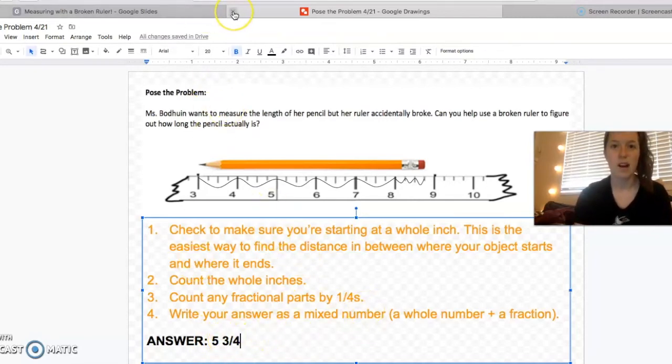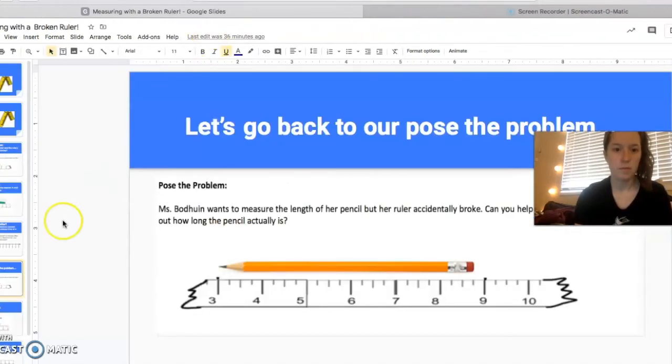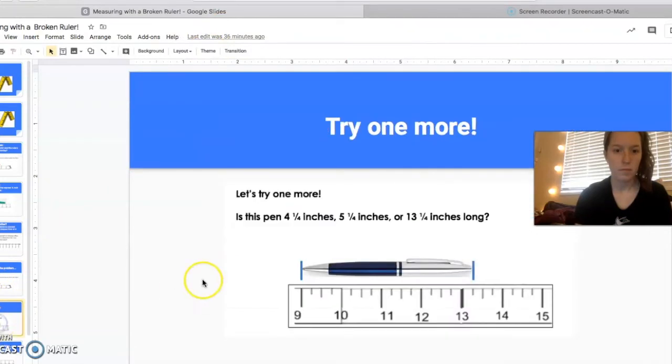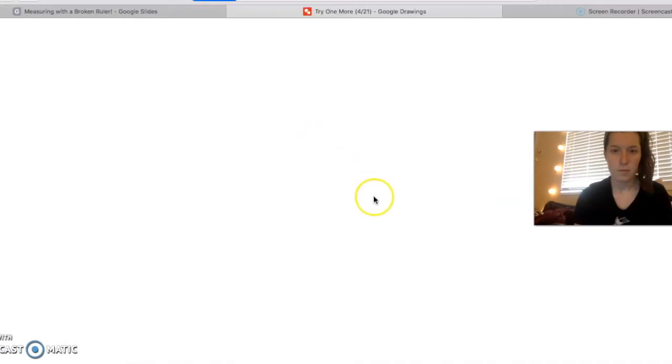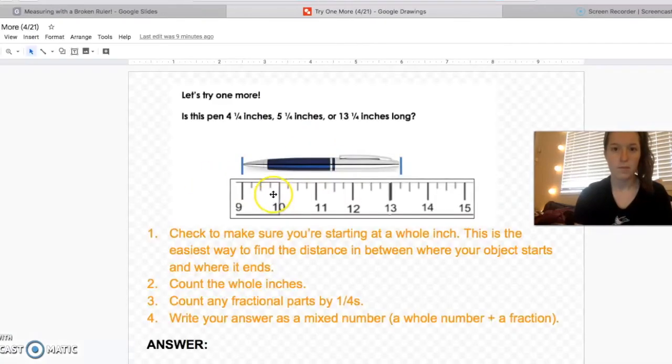All right, let's try one more. This problem says, is this pen four and one fourth inches, five and one fourth inches, or thirteen and one fourth inches long. Okay. So again, I'm going to check to make sure I'm starting at a whole inch. Looks great. I'm lined up with nine, which is a whole number.